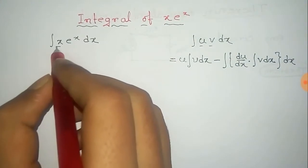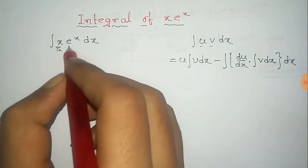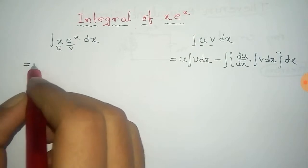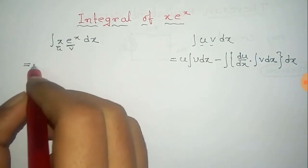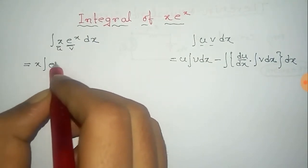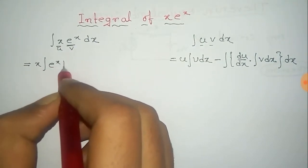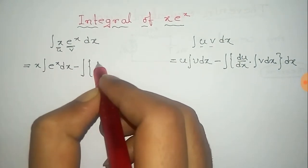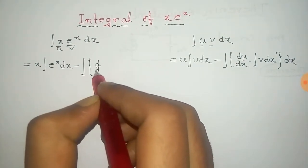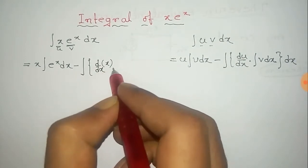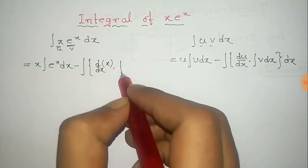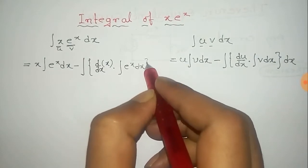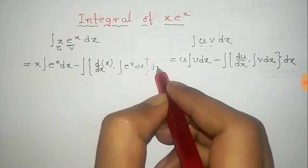Now we apply this formula. We take x as u and e to the power x as v. So that is equal to the first function into integral of the second function, minus the total integral of the derivative of the first function, that is x, into the integral of the second function, into dx.